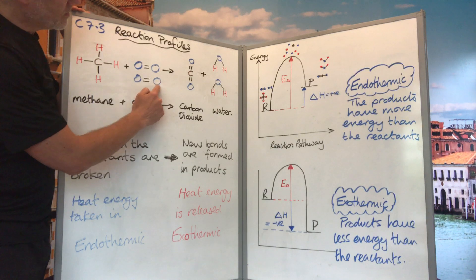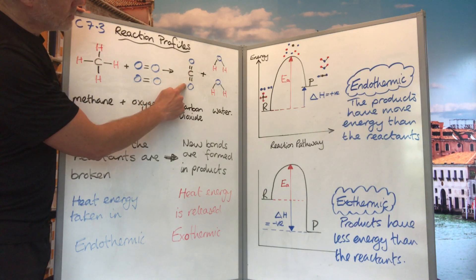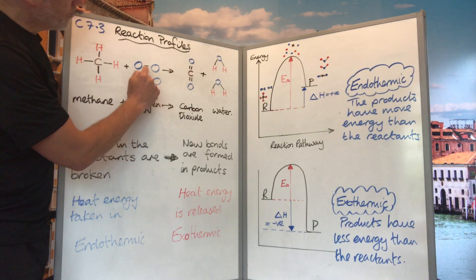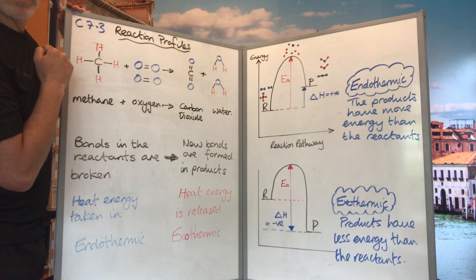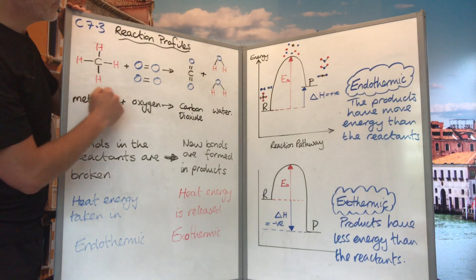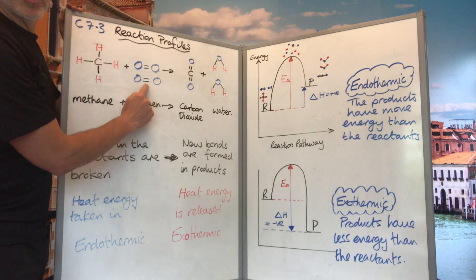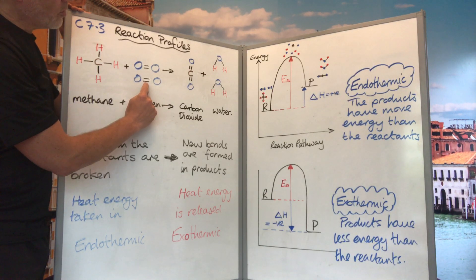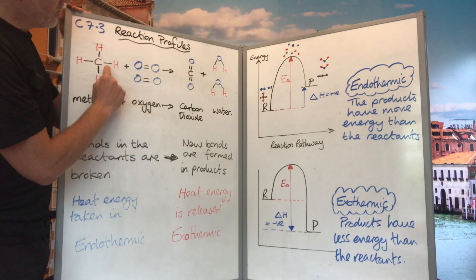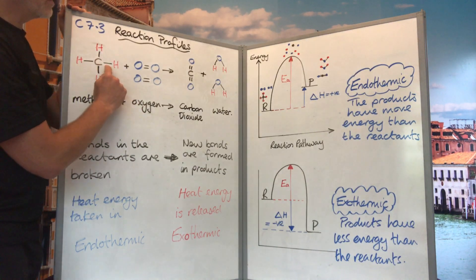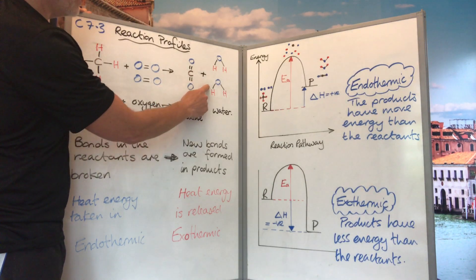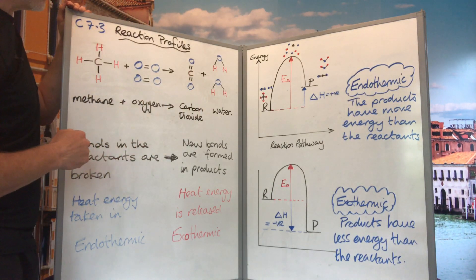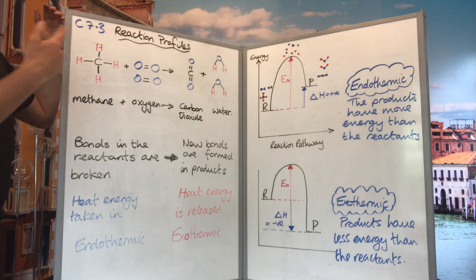Carbon here is bonded to oxygen with double bonds. All the bonds we're showing are covalent because it's non-metal bonded to non-metal. Each bond has a different strength — the double bond between two oxygen atoms has a different strength to the bond between carbon and hydrogen, and the bond between carbon and oxygen is different again.